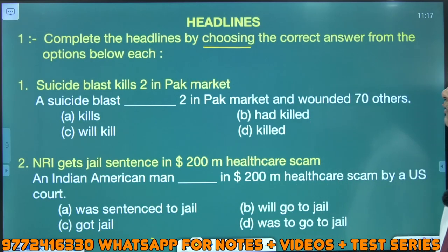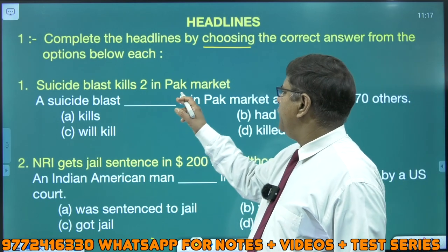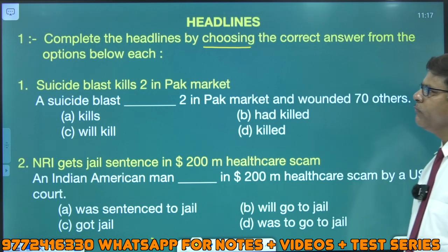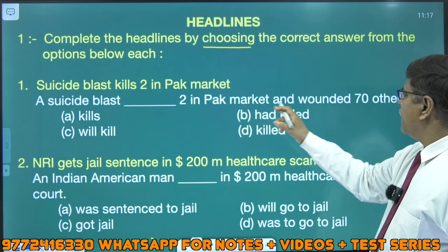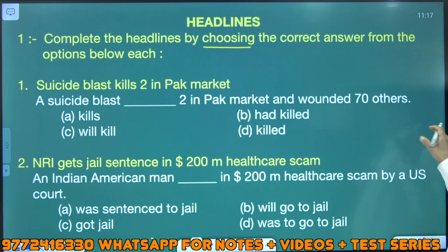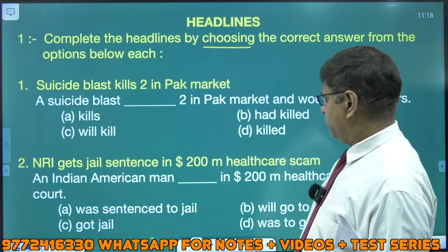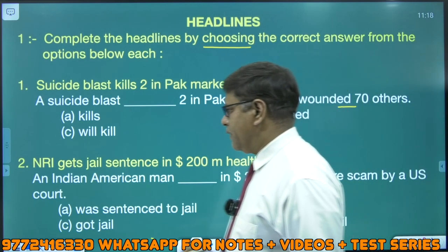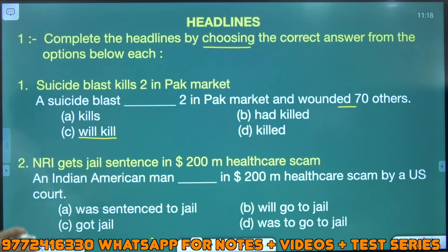Number 1: Suicide Blast kills two in Park Market. Dekhiye — a suicide blast, what we have to fill? Two in Park Market and wounded 70 others. Here we have 'wounded' — suicide blast — action abhi yeh ho chuka ya ab hoga? Analyze each and every multiple choice option, sabko dekhiye.